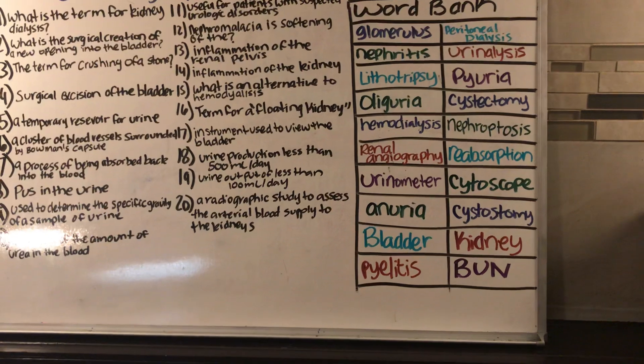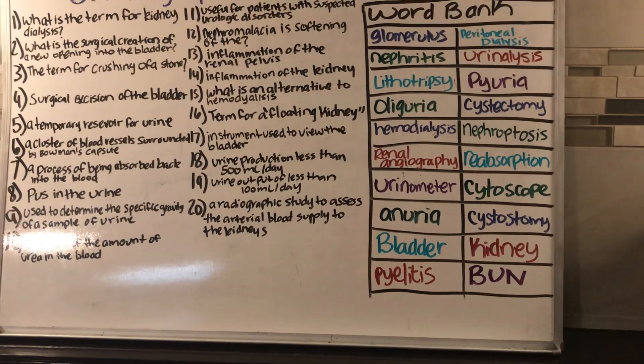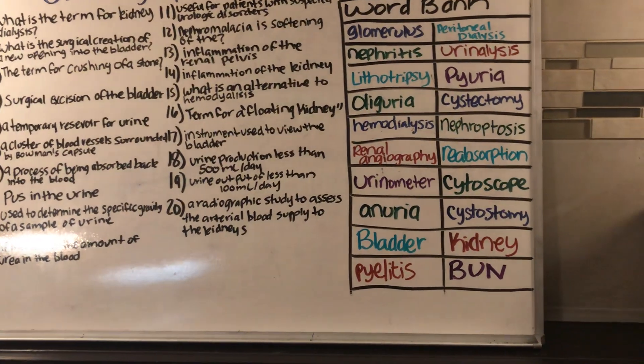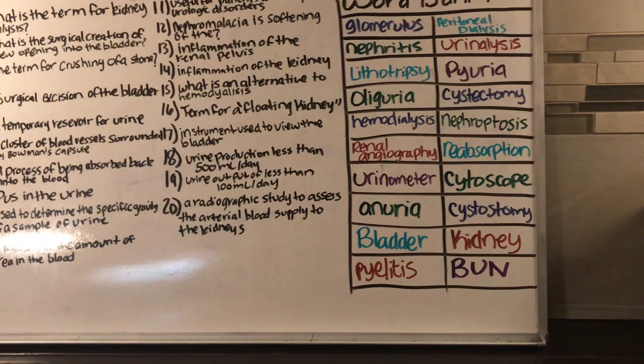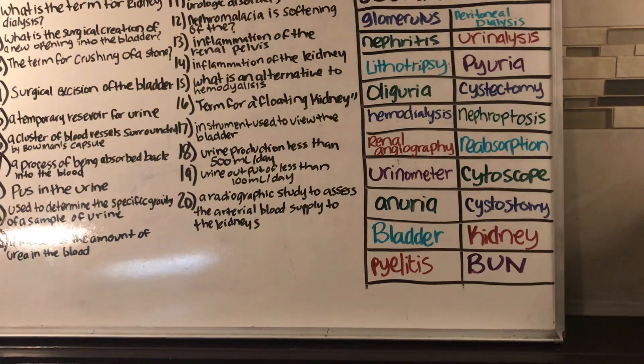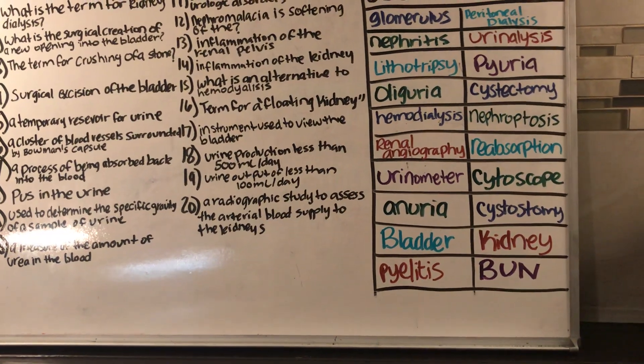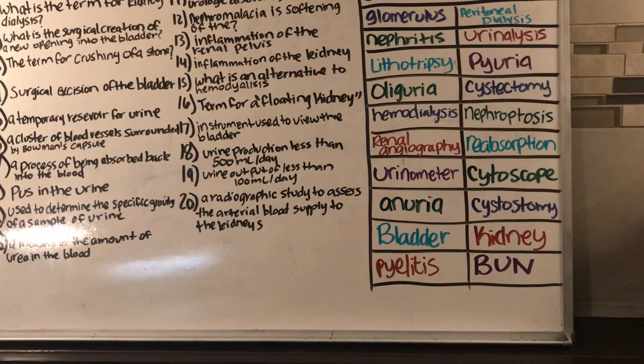Number seventeen: what is the instrument used to view the bladder? Cystoscope.